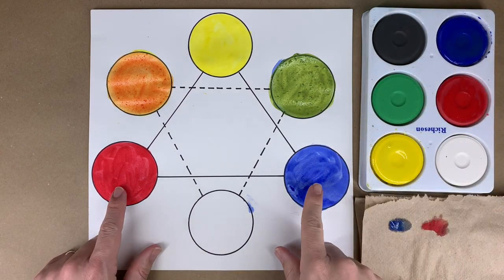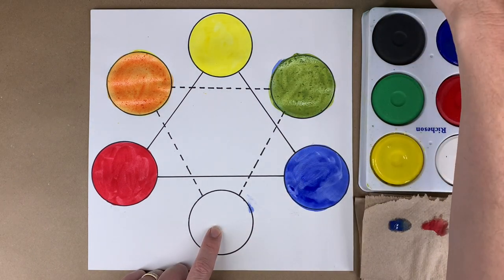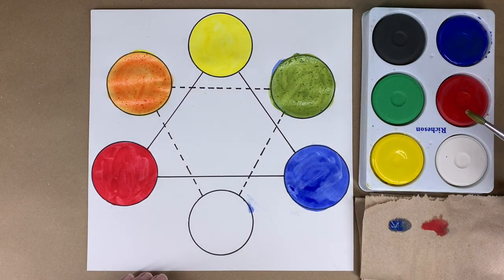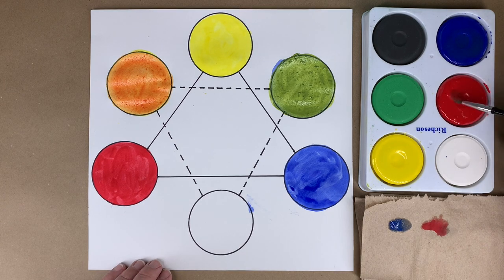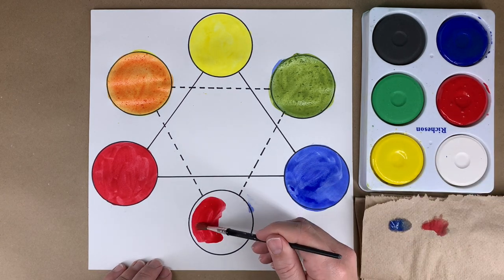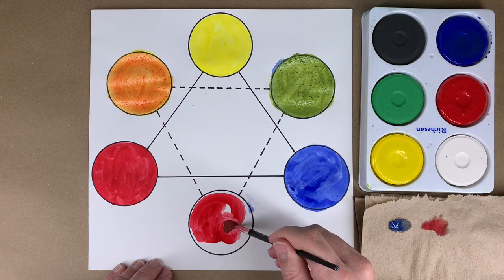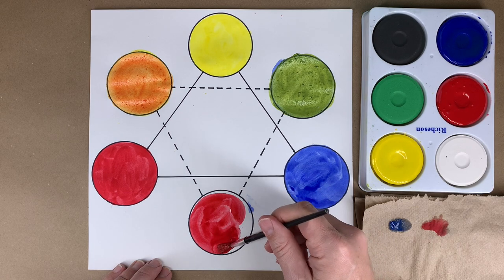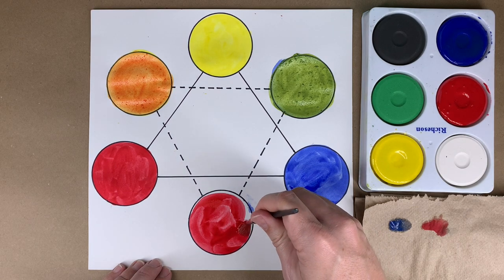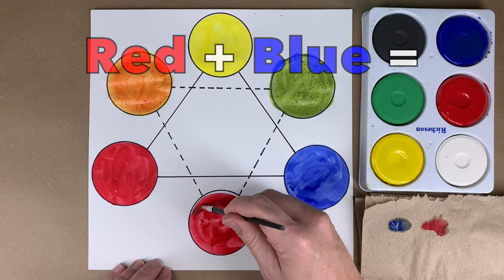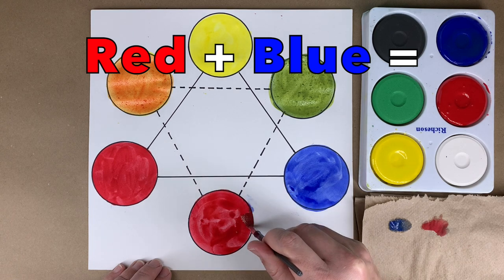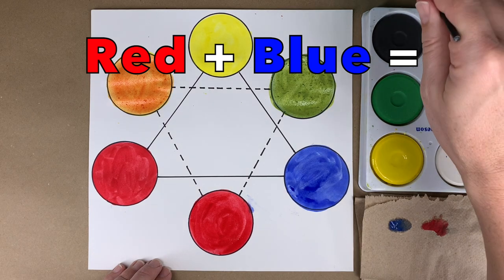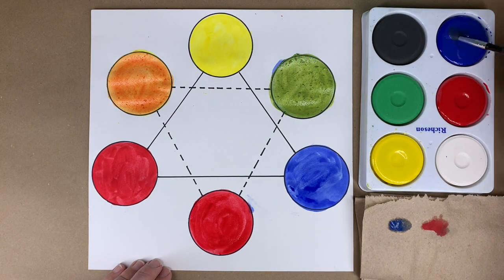Now let's go to the bottom. We're going to mix these two primaries right here to make purple or violet. So first, I'm going to put some red. I'm cleaning my brush. Make some blue, a lot of blue.